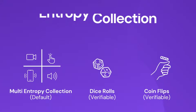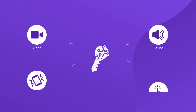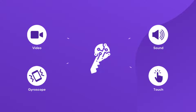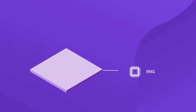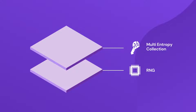In this video we will have a look at AirGap's default secret generator. The default generator collects data from audio, video, touch, and accelerometer, and mixes it up with the output of the hardware random number generator. This creates an additional layer of security in case the RNG is compromised.